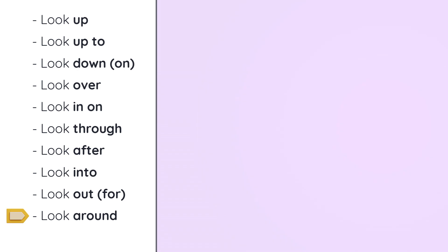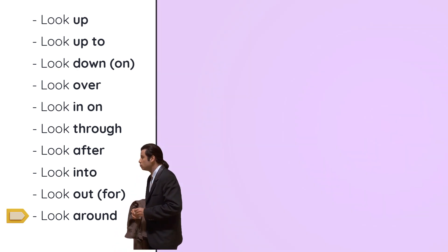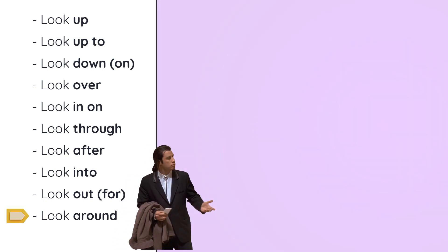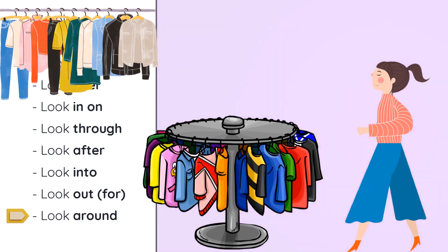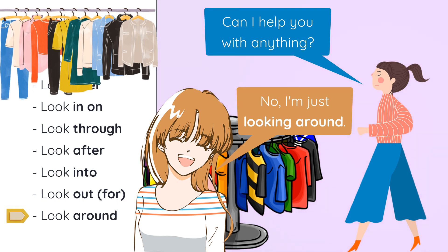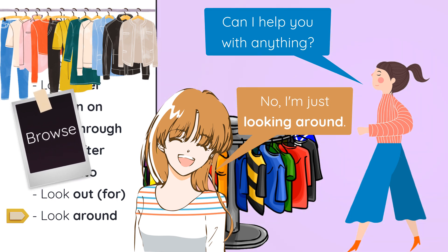Last — look around. Of course there is look around, the physical one, where you're actually moving your eyes around the place. But if you go into a store and the sales clerk comes up to you and says, can I help you with anything? You say, no, I'm just looking around. Looking around basically means browse — you're going to just look and see what's available, what's on sale, if there's anything nice. You're not really looking to buy anything, but if you find something nice, you'll buy it. You're just looking around, just browsing.